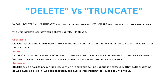Second, on speed: TRUNCATE is faster than DELETE because it doesn't need to check each row individually before removing it. Third, on rollback: DELETE can be rolled back, meaning we can undo the operation if necessary, but TRUNCATE cannot be rolled back — once executed, the data is permanently removed from the table. These are the three main differences between DELETE and TRUNCATE in SQL.